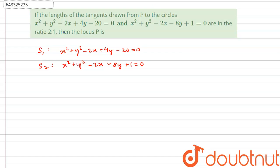We are finding the locus of point P. Let the coordinates of point P be (h, k).